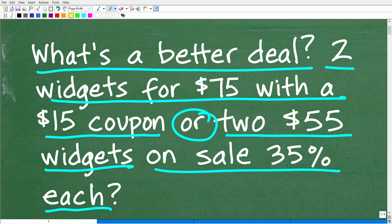Two widgets for $75 with a $15 coupon or two $55 widgets on sale for 35% off. So in either deal, we're going to get two widgets. One is with the coupon, one is with the sale.